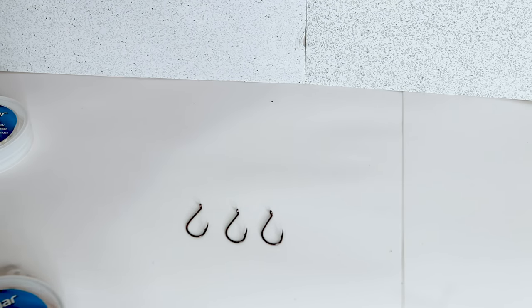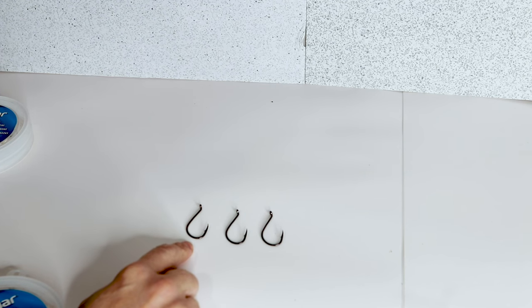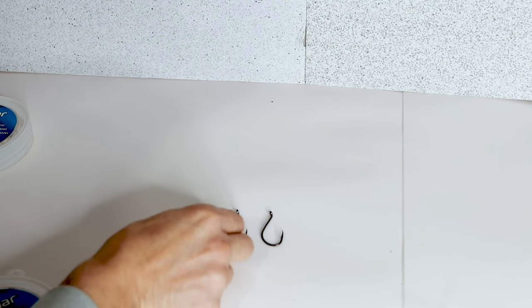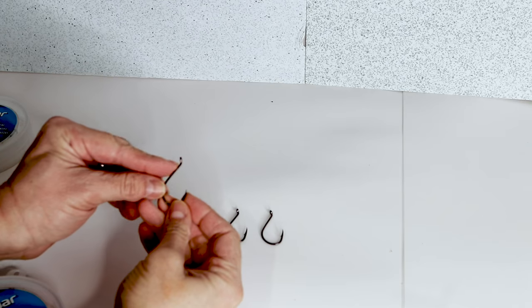So we're tying up some bass rigs here. We're using Gamagatsu 5-0 octopus style hook that has the offset eye of the hook.